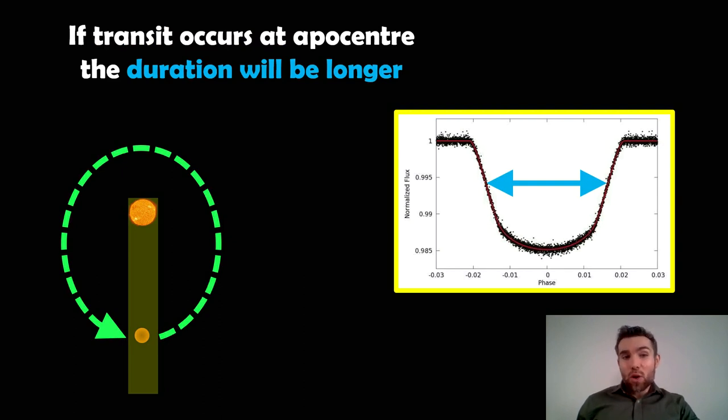Now, if it occurs at the slowest part, like here, so let's say the orbit is arranged like this, we see it passing in front of the star whilst it's at the slowest part of its orbit. The duration of that transit will take longer. So we would expect in this configuration for the duration of the transit to last a little bit longer than in any other part of its orbit.